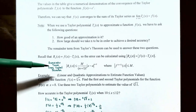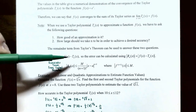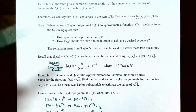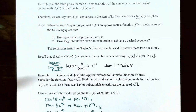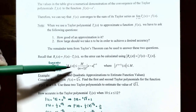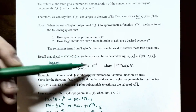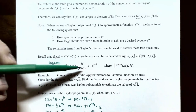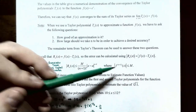Recall that the remainder term from Taylor's theorem is: R_n(x) = f(x) − T_n(x). The error can be calculated by taking the absolute value on both sides: |R_n(x)| = |f(x) − T_n(x)|, the difference between the original function and the nth degree Taylor polynomial approximation. The remainder theorem states that |R_n(x)| ≤ M / (n+1)! times |x − a|^(n+1), where M is the maximum value of the absolute value of the (n+1)th derivative of f evaluated at x.